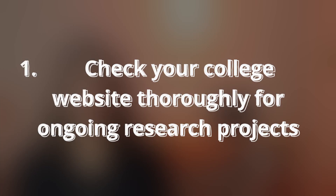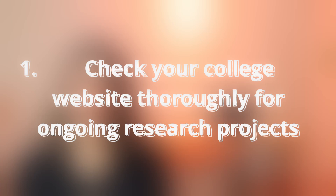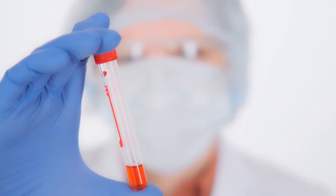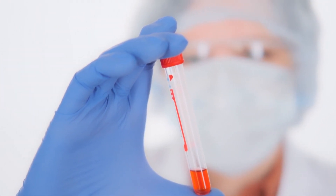The first step is to read through your college website and check if there are any ongoing research projects happening in your school. Many MS students, postgraduate students, or residents have to submit a thesis to graduate and they will be doing some form of research to support their thesis. You can check if you can be a part of their research group by approaching their faculty members as well as your own faculty members.